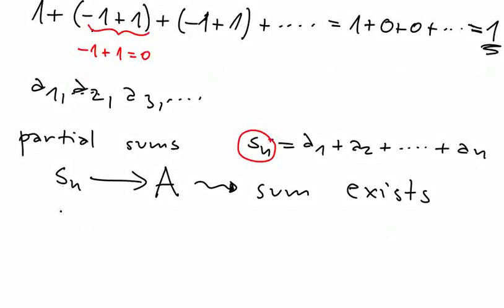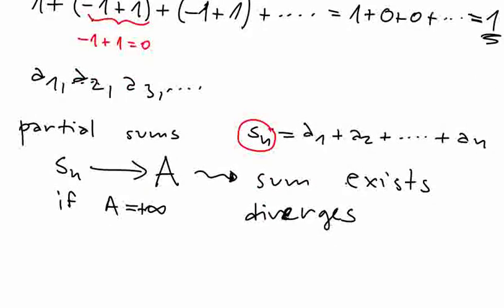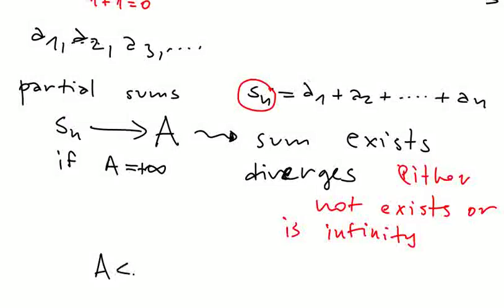And if A equals plus infinity, if this Sₙ is growing unboundedly, then this sum is infinite and we say that the sum diverges. We also say that the sum diverges if it does not exist. So this term means that it either not exists or is infinity. Or maybe smaller than plus infinity, meaning some finite number. And then the series converges.